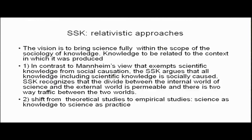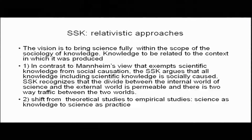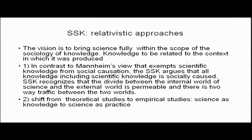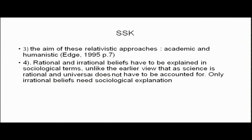Second, there is also a shift from theoretical studies to empirical studies. Science is seen as practice; we see the movement from science as knowledge to science as practice. Thirdly, the aim of these relativist approaches is academic and also humanistic. Fourth, rational and irrational beliefs have to be explained in sociological terms. Unlike the earlier view that since science is rational and universal, it does not have to be accounted for in sociological terms — only irrational beliefs need sociological explanation.